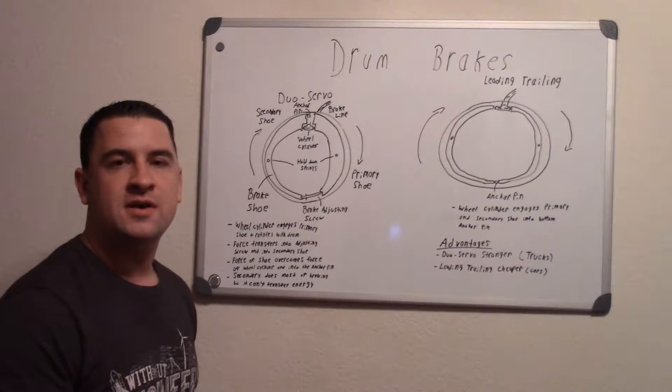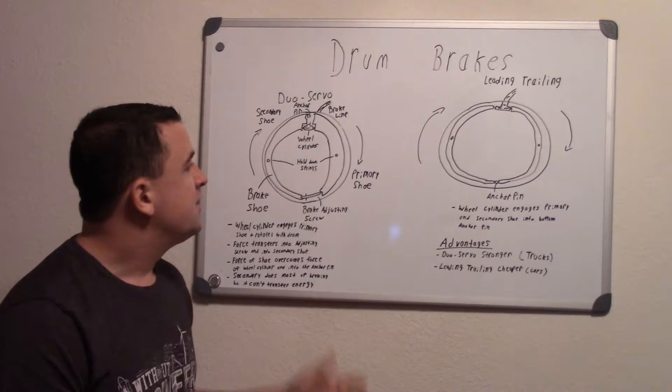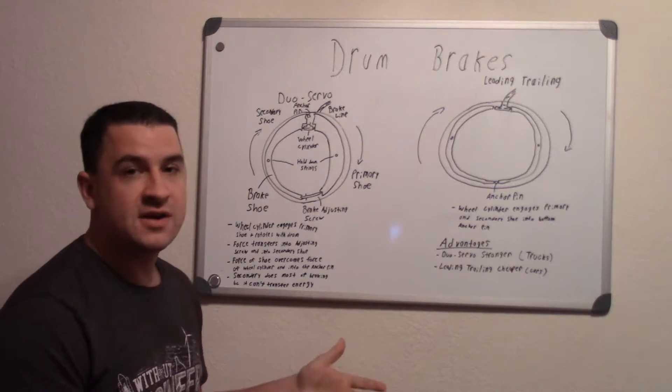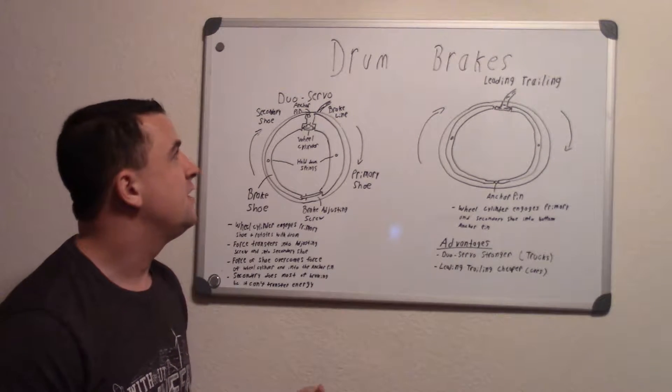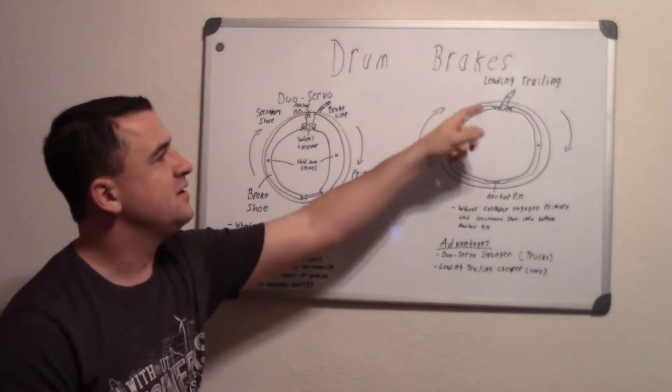Hey guys, so in this video I'm going to be describing how a drum brake system works. And like disc brakes, there's two different kinds. The two different kinds of drum brakes are called duo servo and leading trailing.